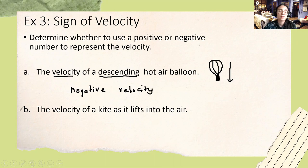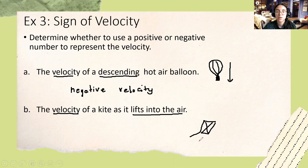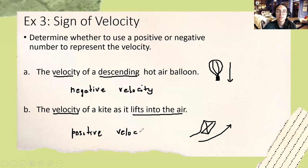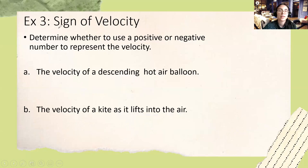For scenario B, we're asked to find the sign of the velocity for a kite as it lifts into the air. I'll underline 'lifts into the air.' The kite is going up into the sky, so because it's going up, the velocity is going to be positive — a positive value for velocity.